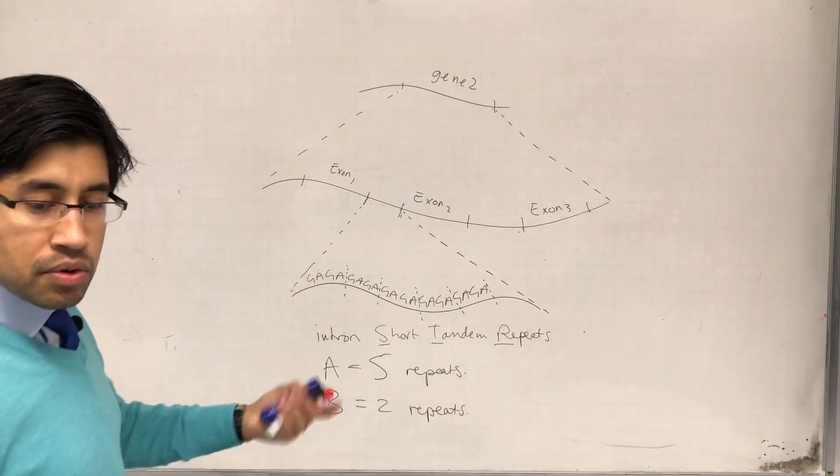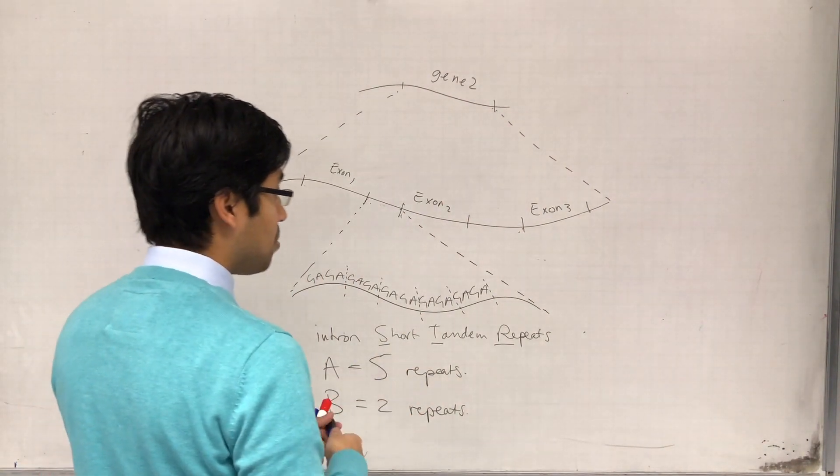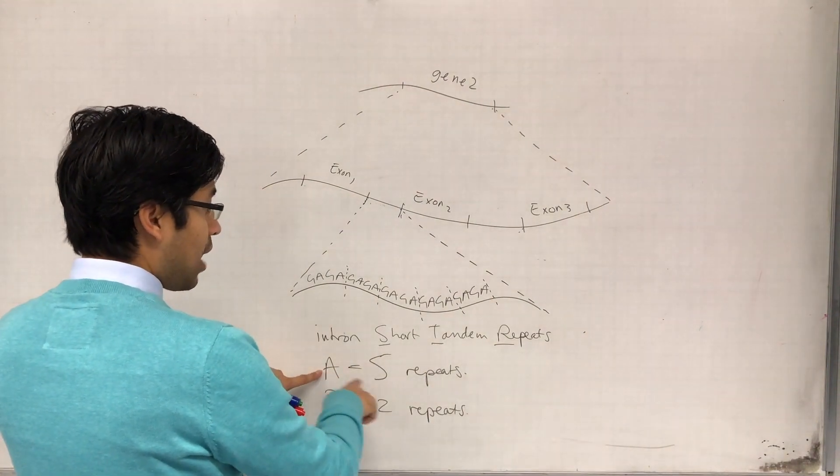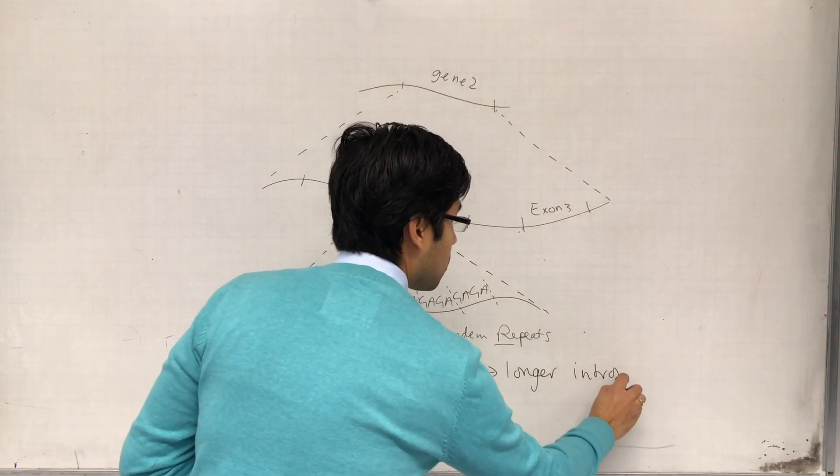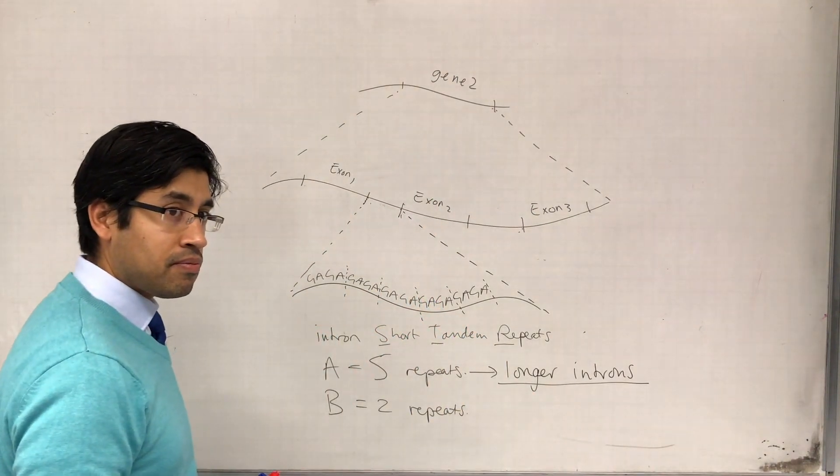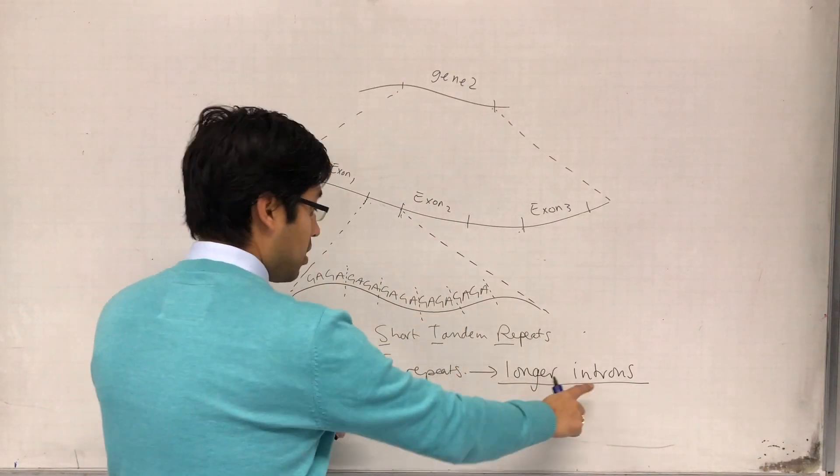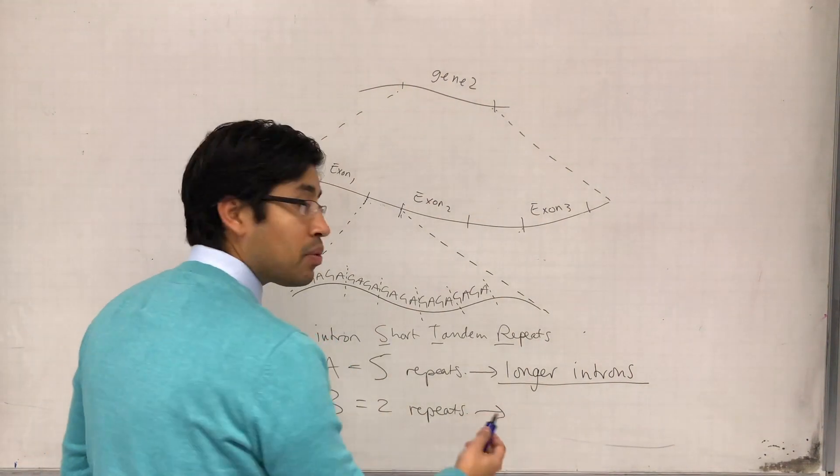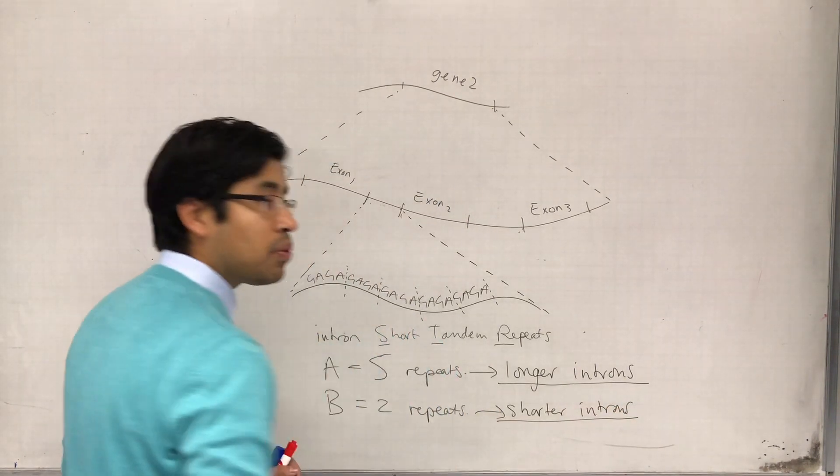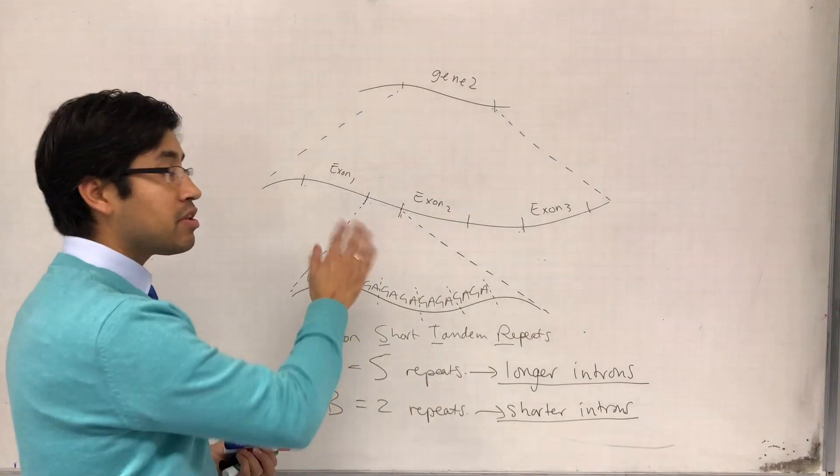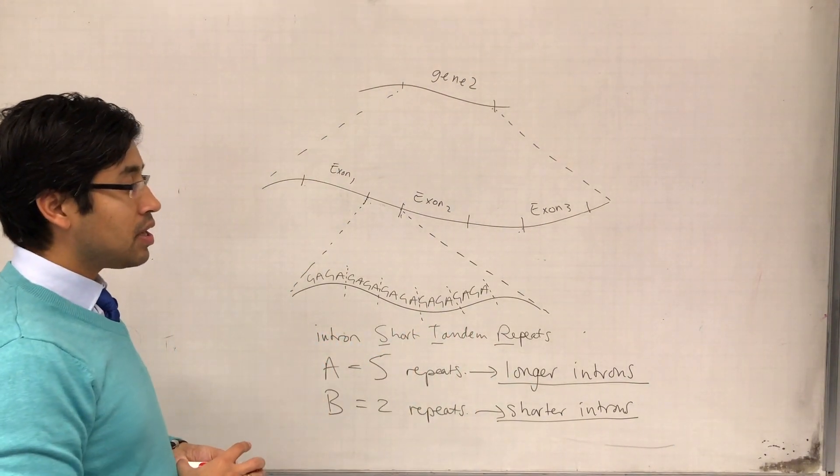How can we use this to tell the difference between people? What this means is that if person A has got five repeats they have longer introns, because this person's got five repeats of GA GA, but the person who's got two repeats will have shorter introns for this particular gene. This is what genetic profiling takes advantage of. It essentially cuts out these introns and allows us to compare whether someone has a long intron or a short intron.